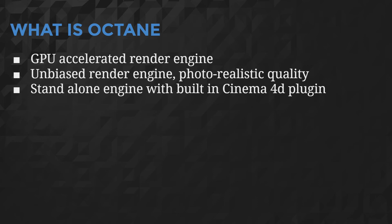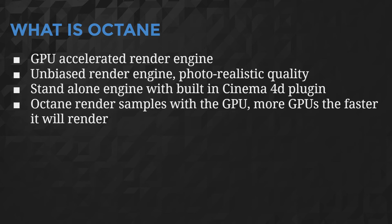Octane is a standalone renderer which has a built-in plug-in to be used inside of Cinema 4D's interface. Octane samples the image with the computer's GPUs. The more GPUs you have in the computer the faster it will render.